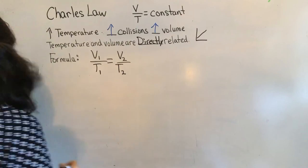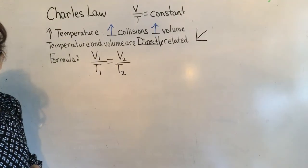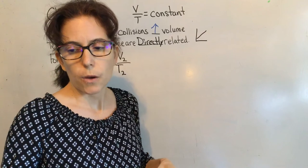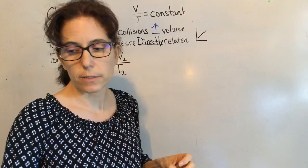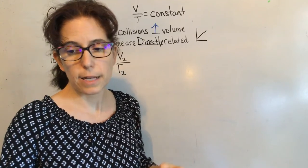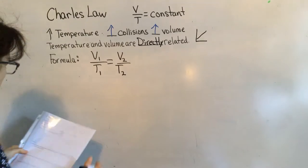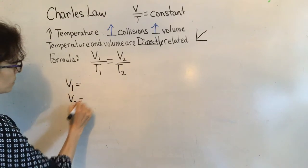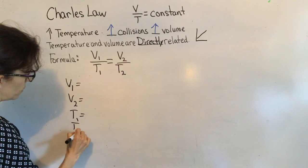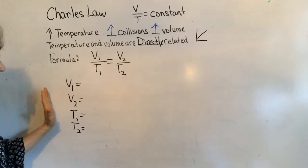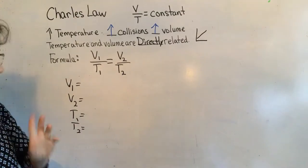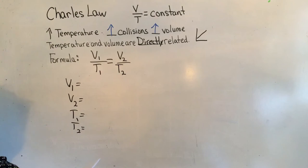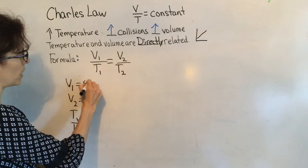That is the formula you'll use for the entire worksheet. We're going to go over the front of the worksheet: a sample of gas occupies 430 milliliters at a temperature of 25 degrees Celsius. What volume will it occupy at standard temperature, which is zero degrees Celsius? For every problem, please write down: V1 equals, V2 equals, T1 equals, T2 equals. So V1 is 430 milliliters.